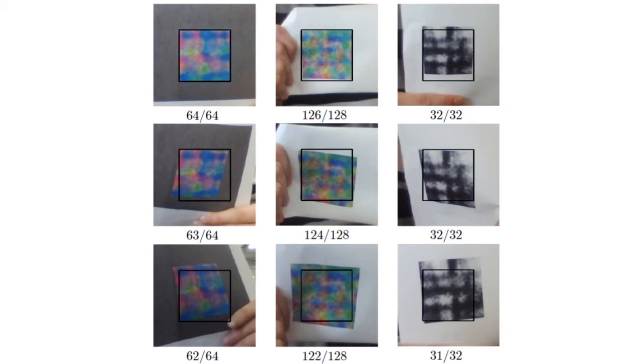This slide shows real recognition examples for different families of our visual markers, both color and grayscale. In our demo interface, the user is asked to align the visual marker with the black rectangle. For each image, the second number shows the overall bit length, and the first number is the number of correctly-recognized bits.